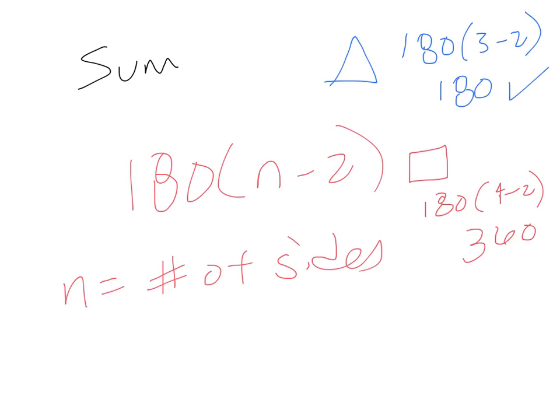And so forth. If we did an 8-sided figure, you would do 180 times 8 minus 2, which in this case would be 1,080. So the number of degrees in all of the angles in a regular octagon would be 1,080 degrees.